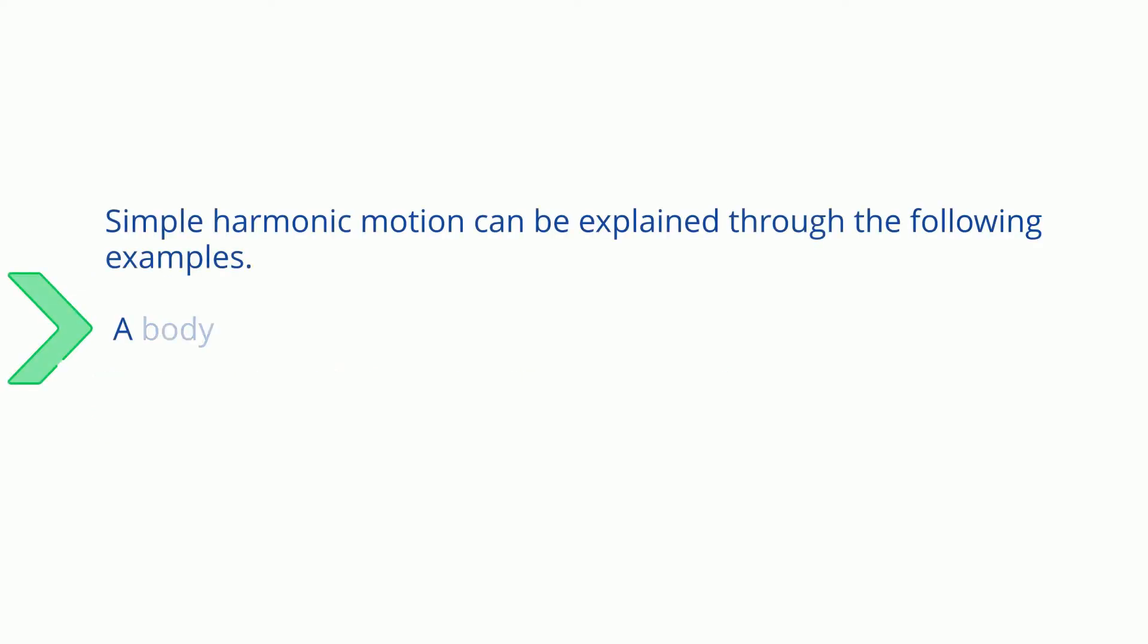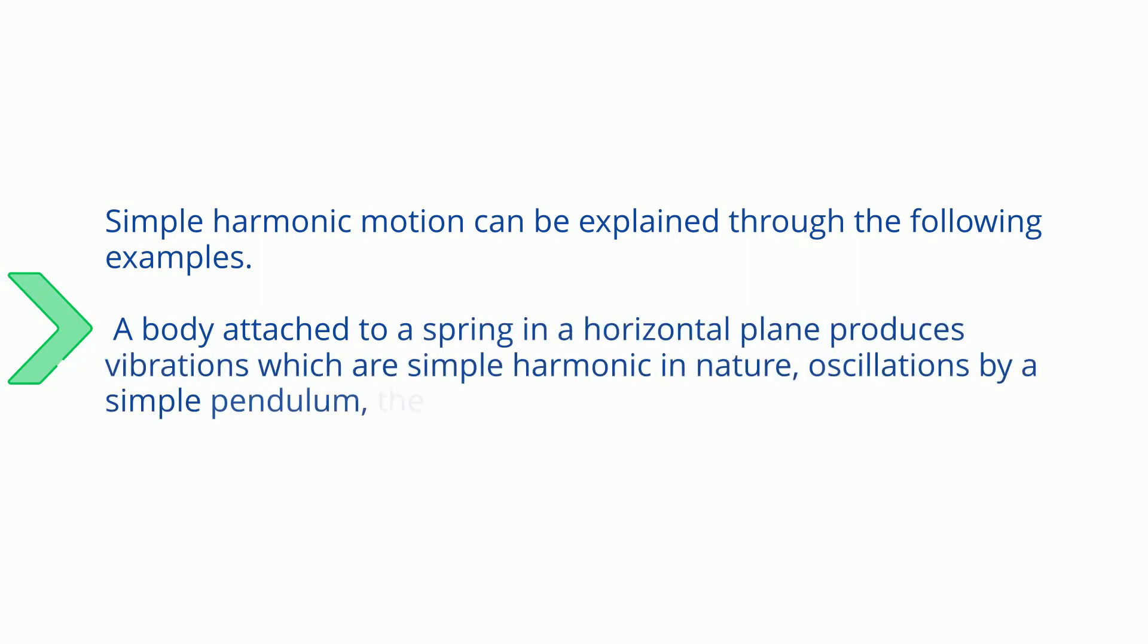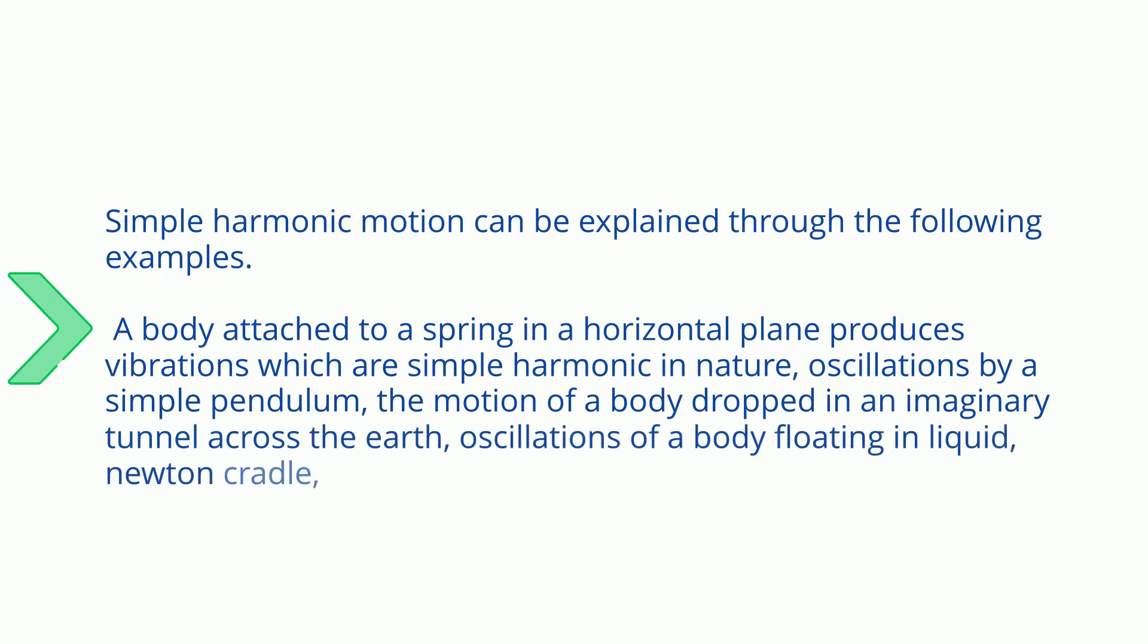Simple harmonic motion can be explained through the following examples: a body attached to a spring in a horizontal plane produces vibrations which are simple harmonic in nature, oscillations by a simple pendulum, the motion of a body dropped in an imaginary tunnel across the earth, oscillations of a body floating in liquid, Newton cradle, swings, oscillation of a body in the neck of an air chamber.